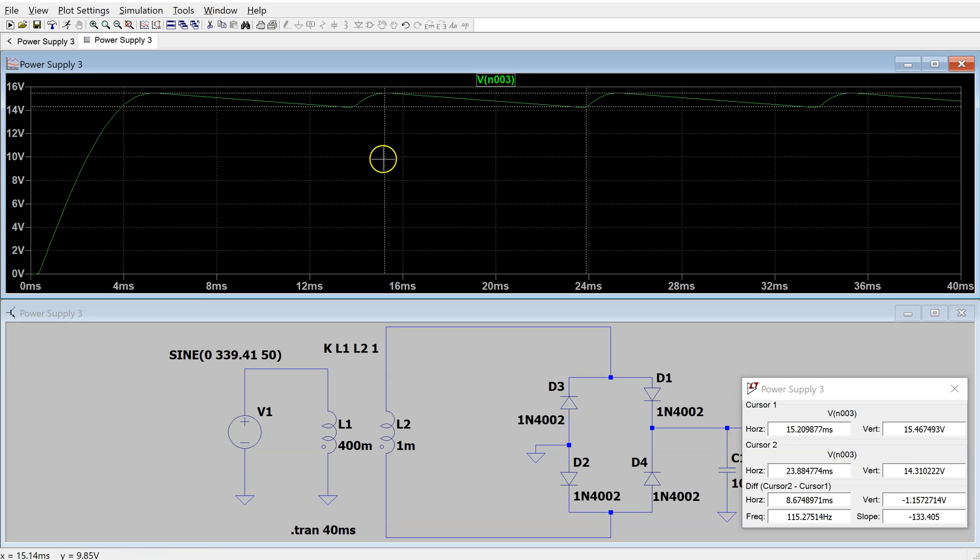To measure the ripple frequency, we reposition cursor 1. We can see that the ripple has a frequency of 100 Hz, which is double that of the frequency of the input signal and this is as expected.